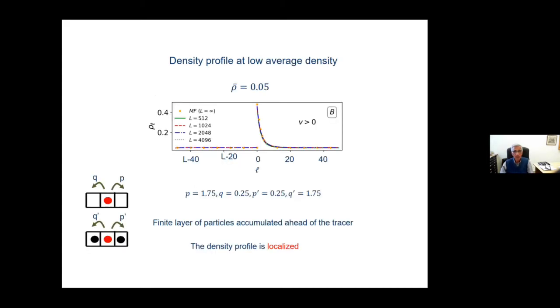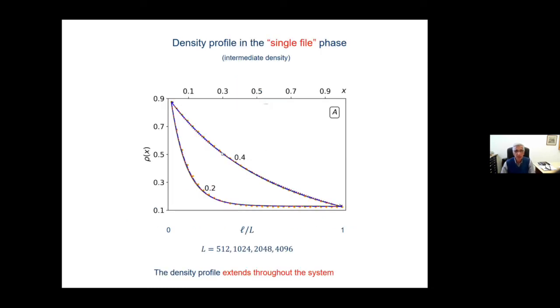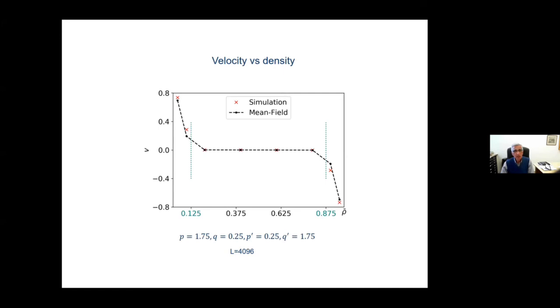And so we have either a localized phase with ordinary behavior here, or this more restricted behavior. If you plot the velocity as a function of density, you see that at low density, indeed, the velocity is finite, but then at some point, the velocity becomes zero. And that's how you get the transition from the localized phase to the extended phase, what we call the extended phase, which is basically the single file kind of phase, while this one is the diffusive.